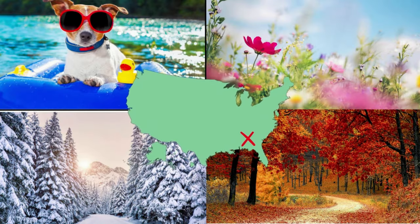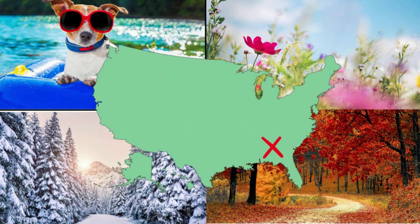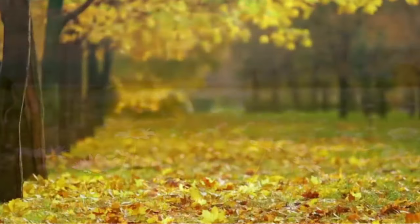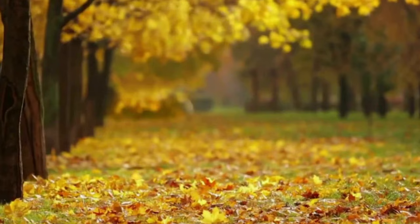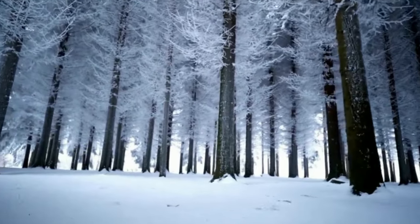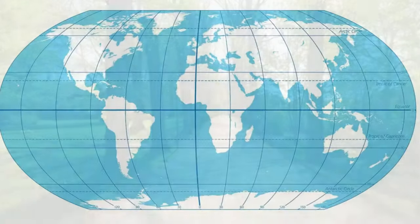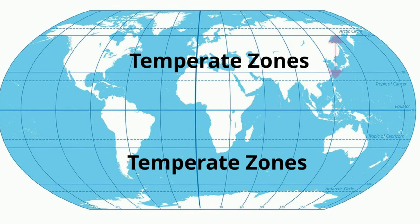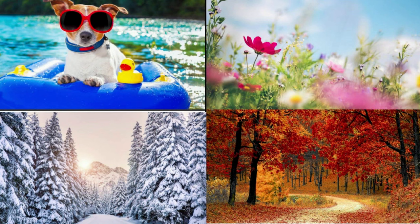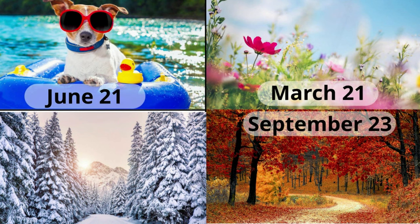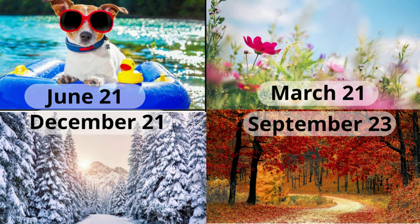Seasons only occur in two regions of the world — the temperate zones located at 23.5 degrees north and south and 66.5 degrees north and south. In the Northern Hemisphere, spring begins around March 21st, summer around June 21st, autumn around September 23rd, and winter around December 21st.